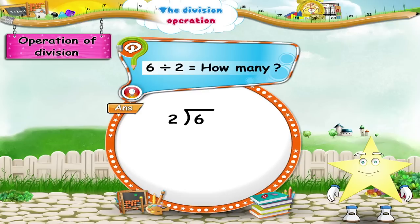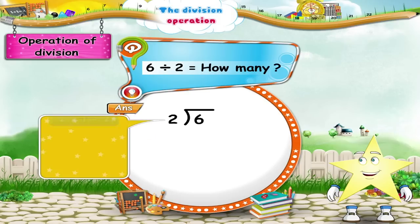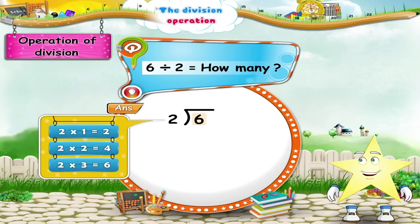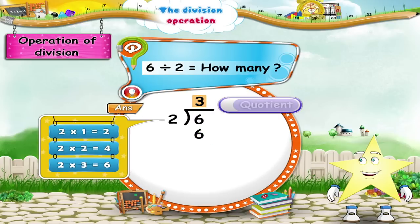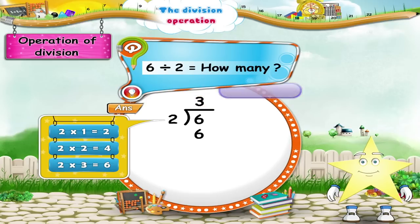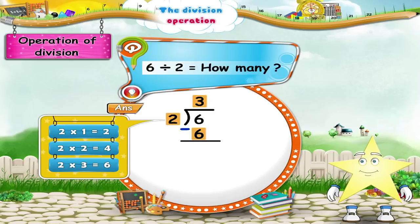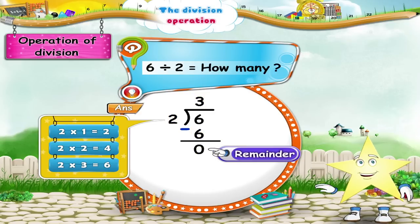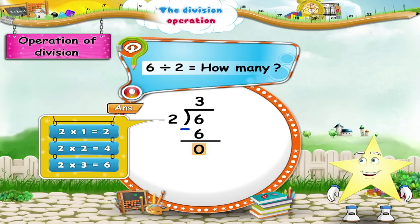Now, let us begin the operation. To divide 6 by 2, first say the 2 times table up to 6. 2 3's are 6. 3 is the quotient. Next, subtract the product of 2 and 3 from the given 6. The remainder is 0.